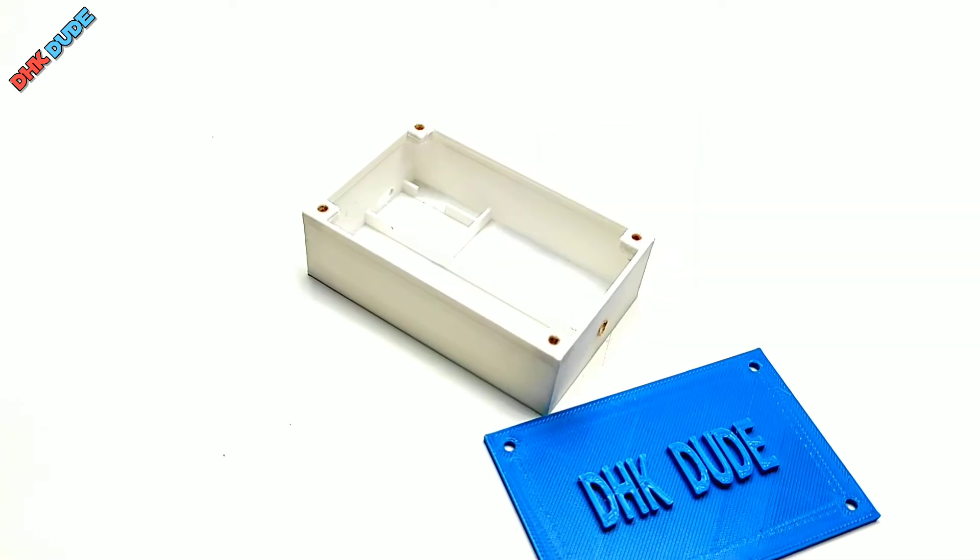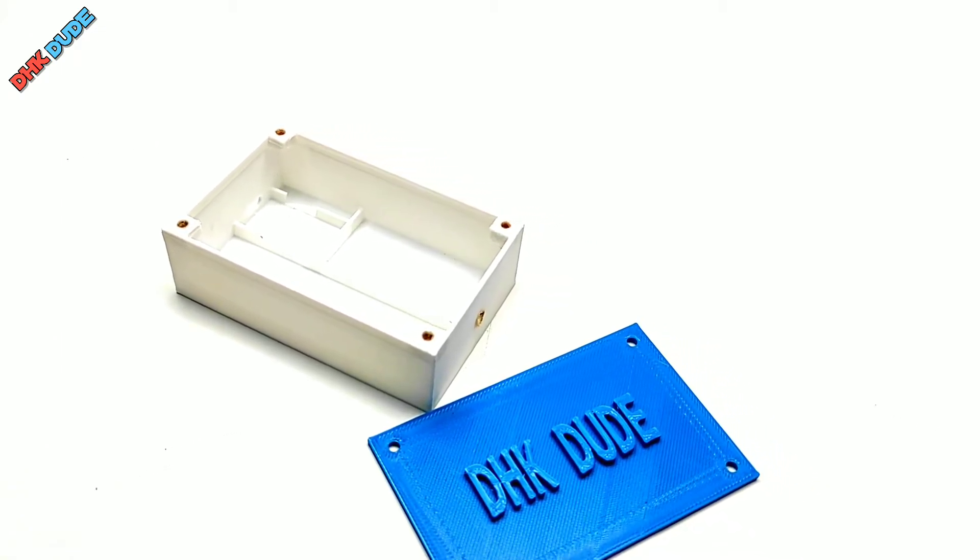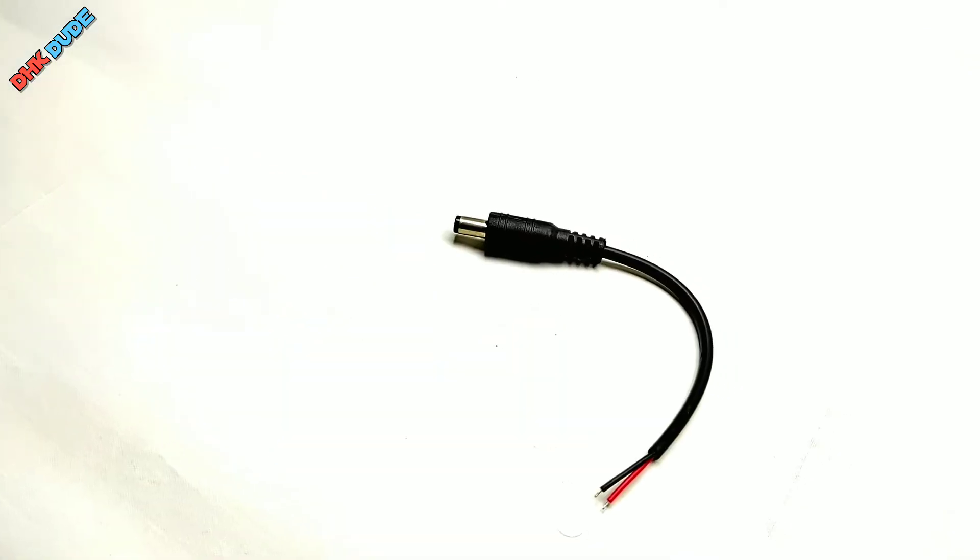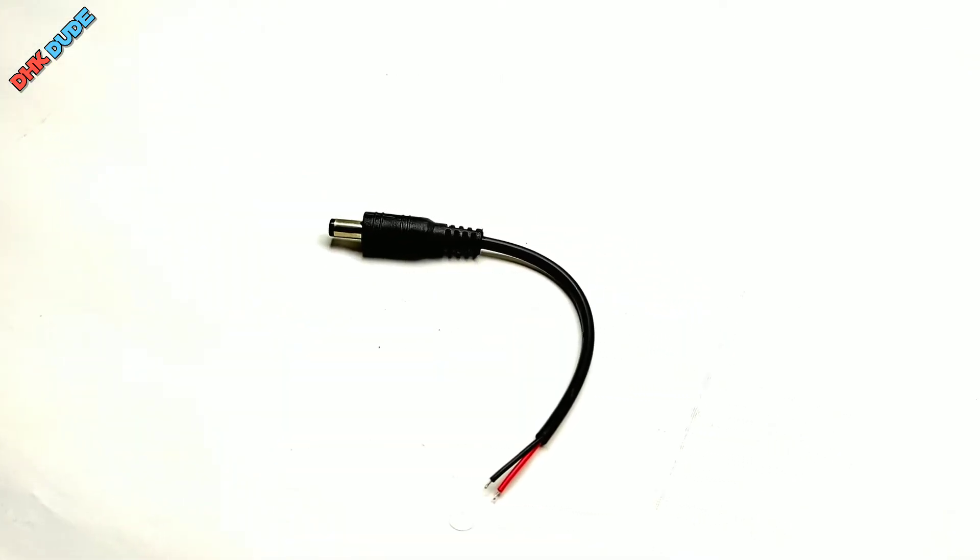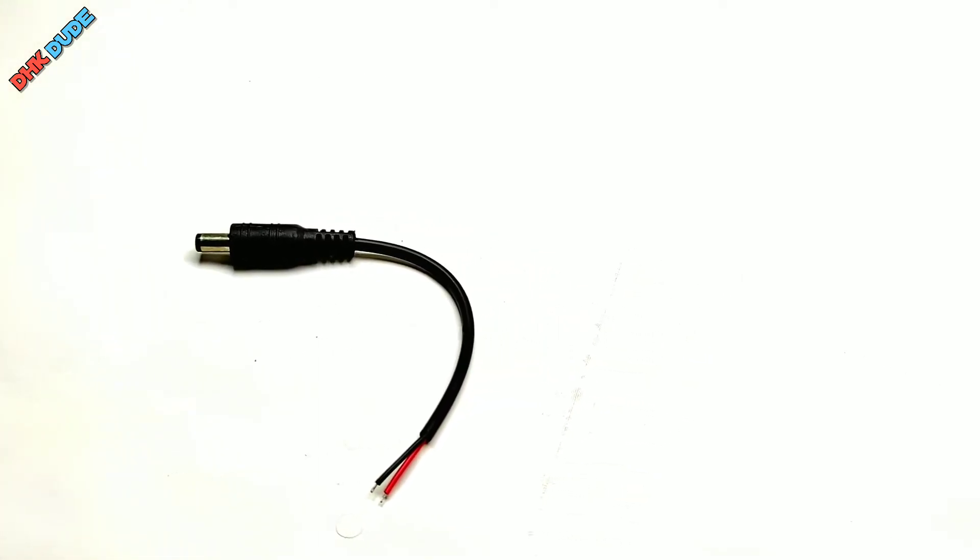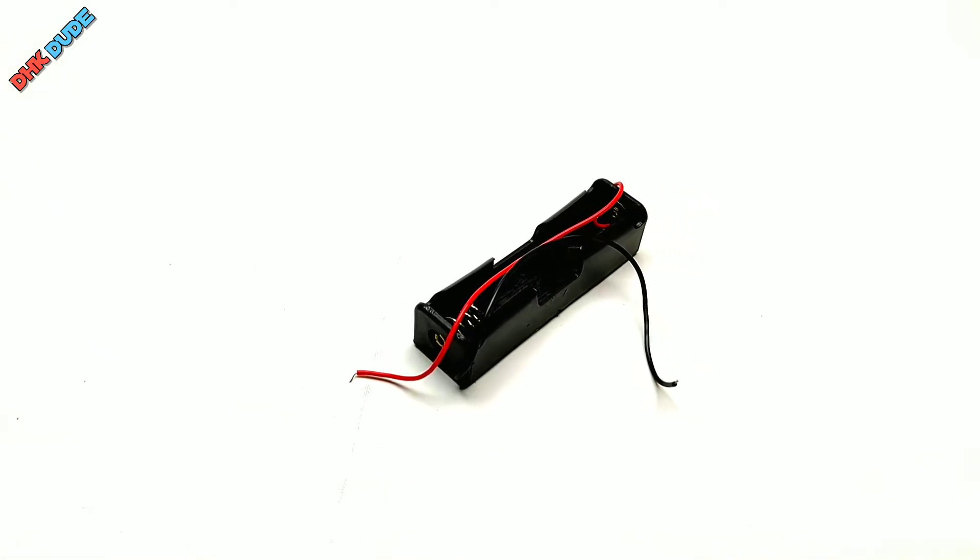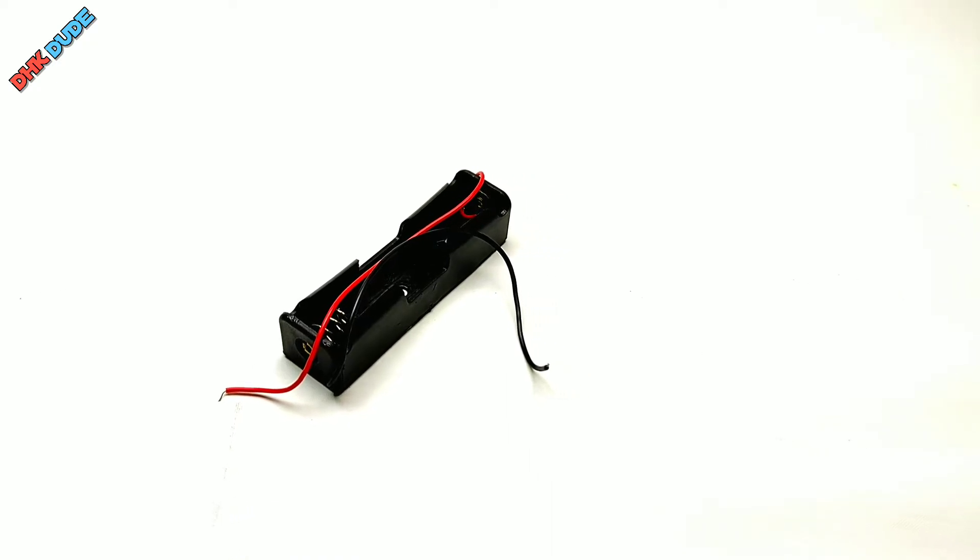I printed the case with white PLA filament so charging and battery full status LED can be seen easily. To make this UPS you will need a barrel jack pin. Buy it according to your Wi-Fi router socket as diameter of pin may vary. You will need an 18650 battery socket. We are using single battery for our UPS.